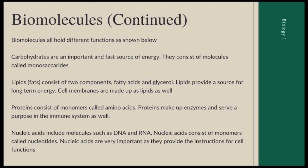Each biomolecule holds different functions. It's important to know that each biomolecule is composed of individual molecules called monomers, and these monomers are bonded together to form a polymer. Carbohydrates are a fast source of energy, and their monomers are called monosaccharides. Lipids are a long-term source of energy and technically do not have monomers. Proteins are made up of monomers called amino acids; they make up enzymes and serve a purpose in the immune system. Nucleic acids such as DNA and RNA have monomers called nucleotides, and they are basically the instructions for the cell to carry out its functions and create proteins.